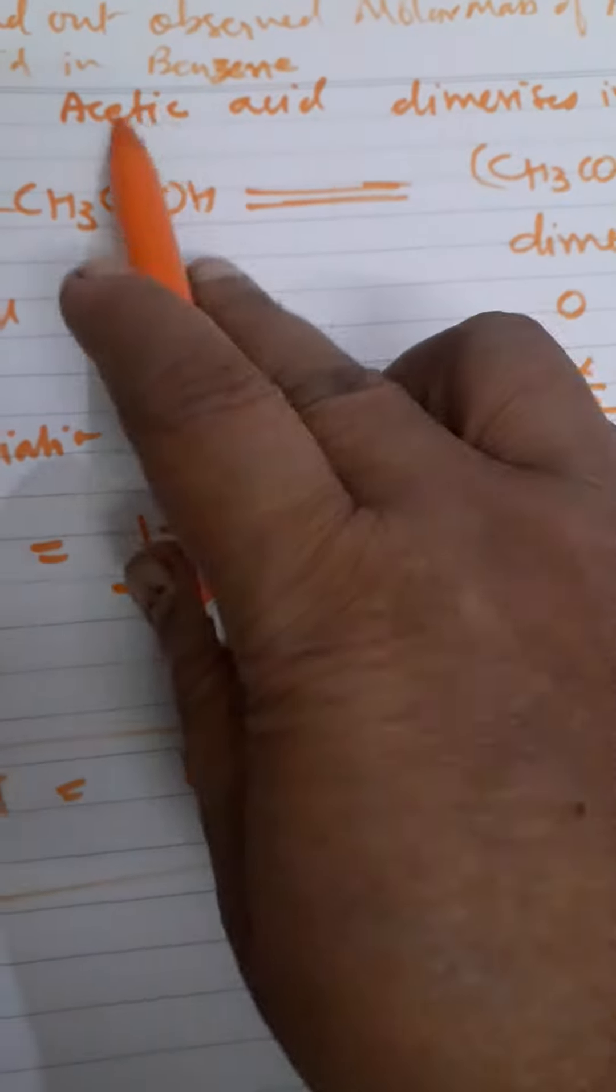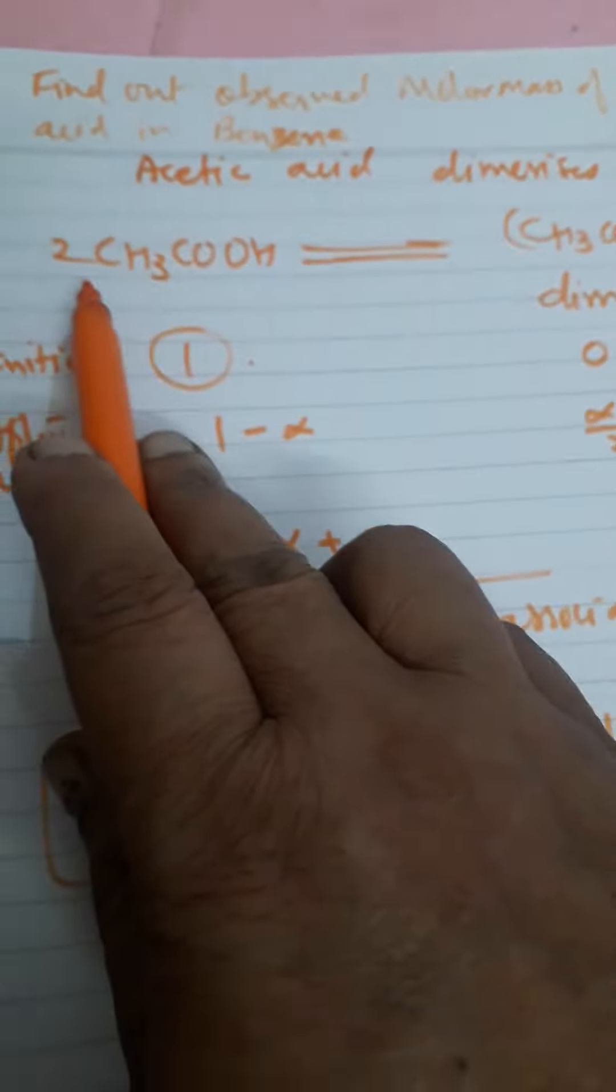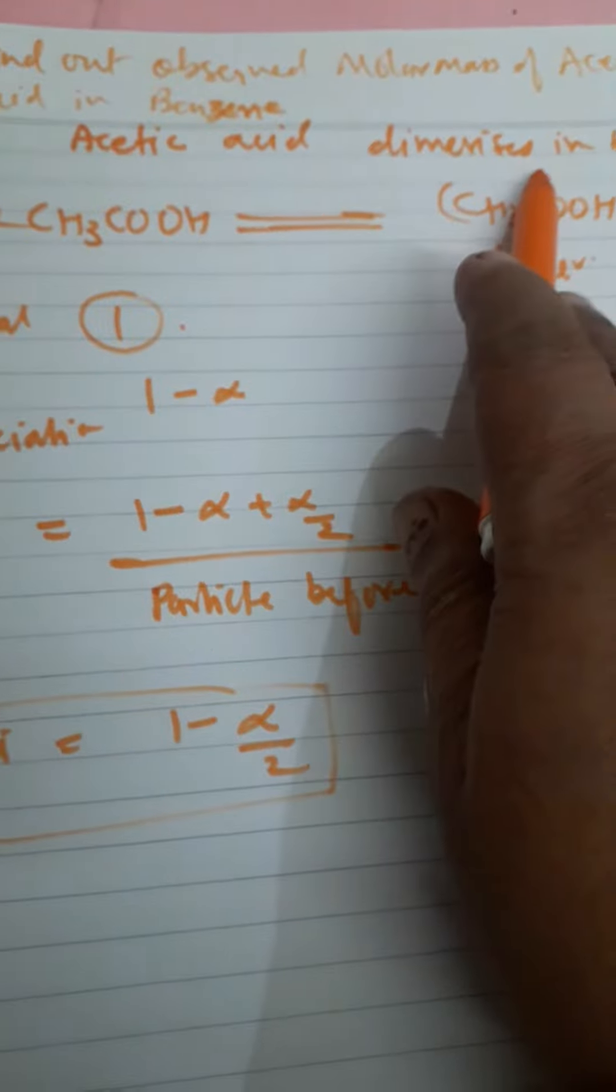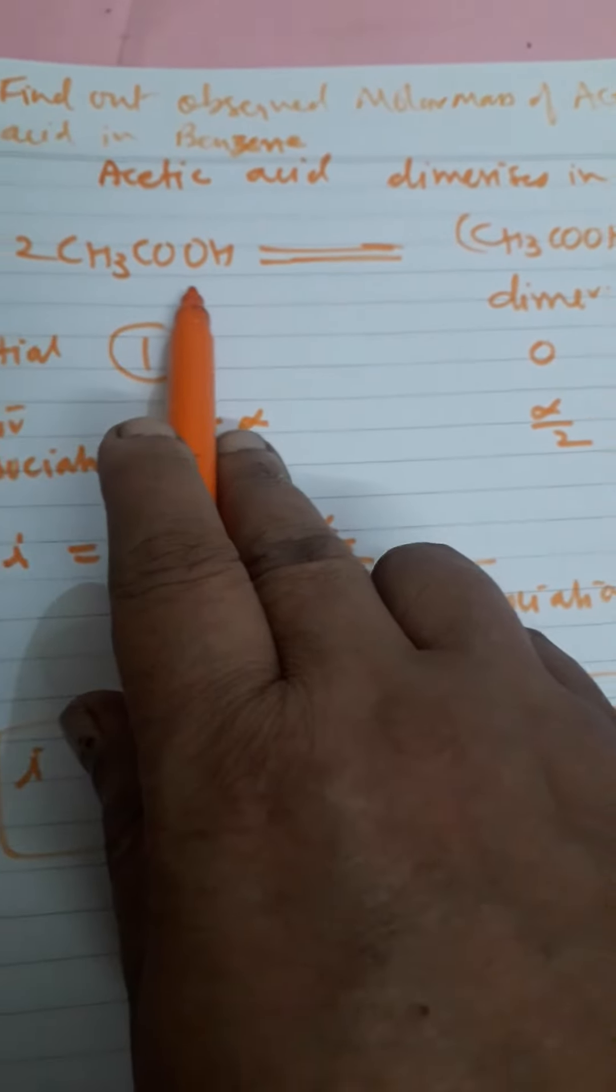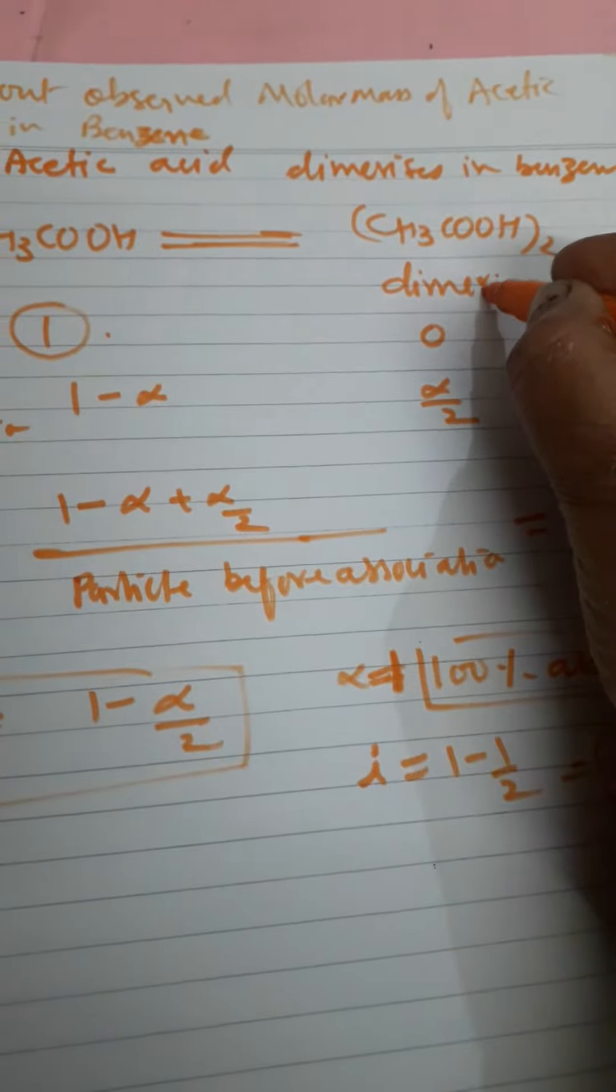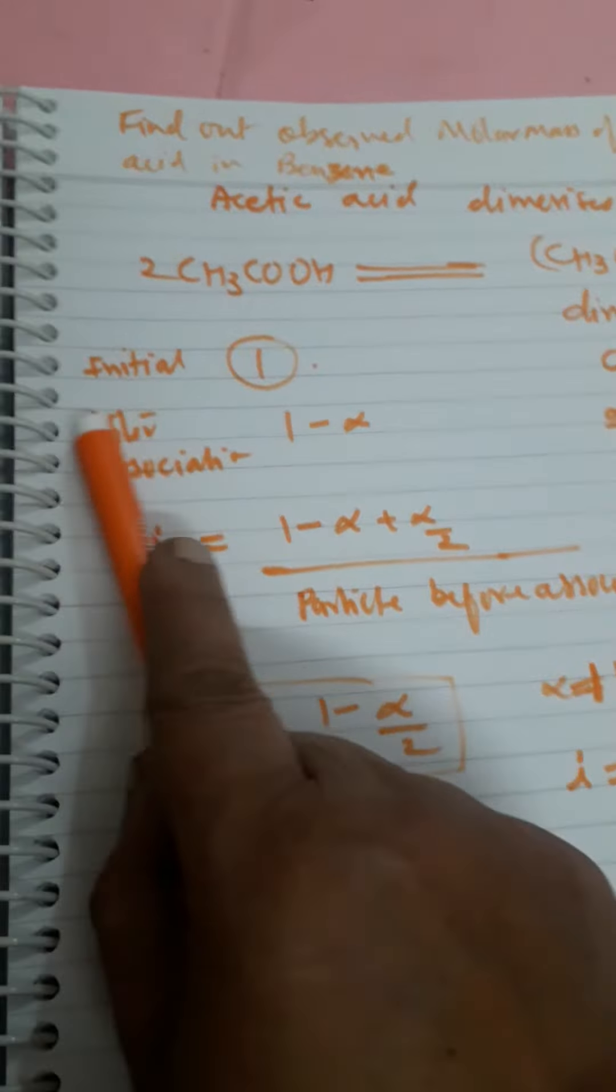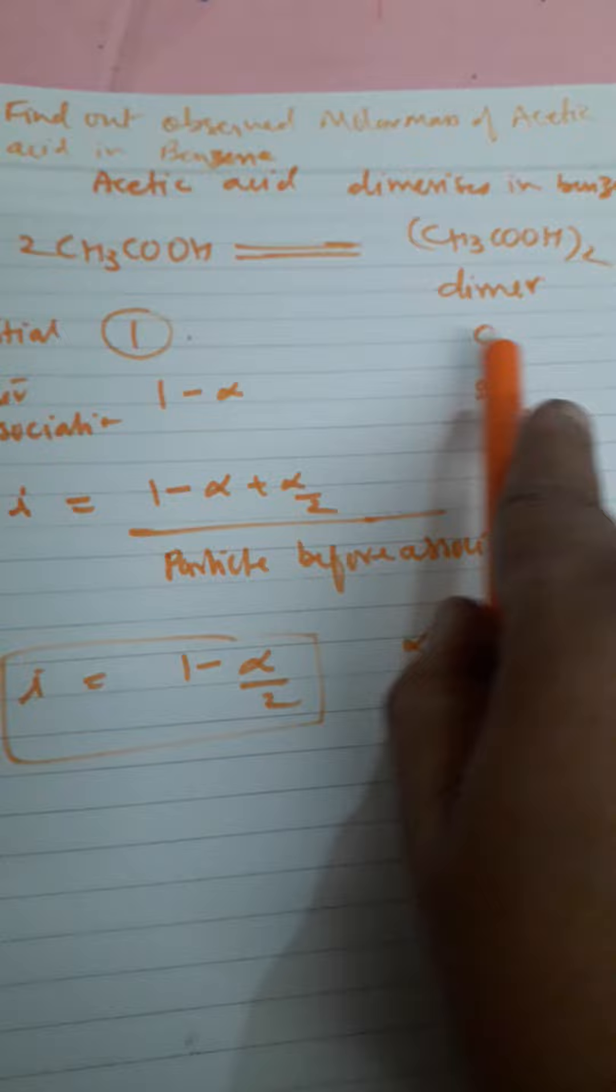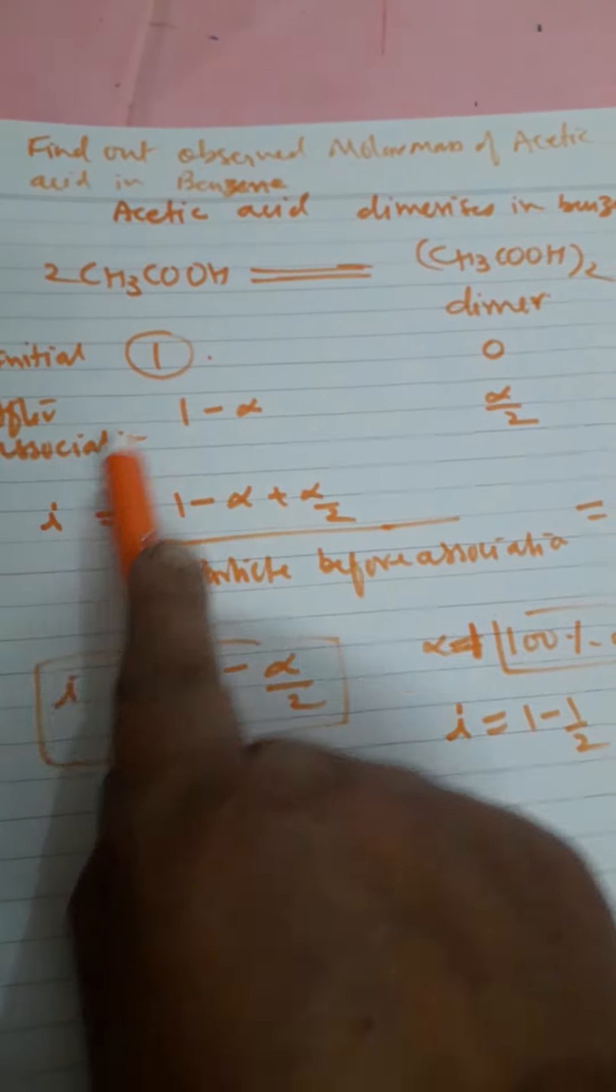Find out observed molecular mass of acetic acid in benzene. Acetic acid in benzene dimerizes. Dimerizes means two moles of acetic acid will form one molecule, one dimer. Initially, suppose we will take one mole, so it will be zero initially, but after association...